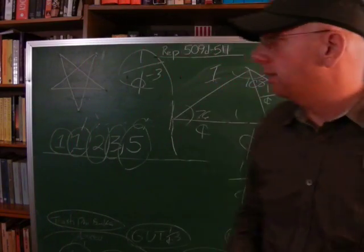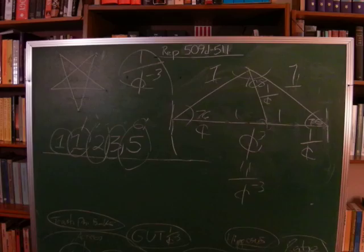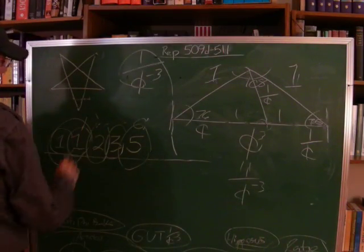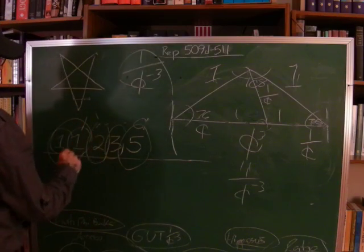In a future video, we'll talk about specific details about the Fibonacci sequence such as 1, 1. This is the Trinity. 1, 1.